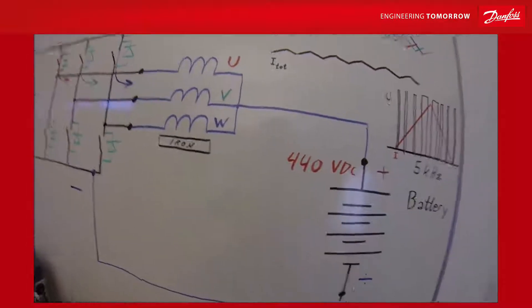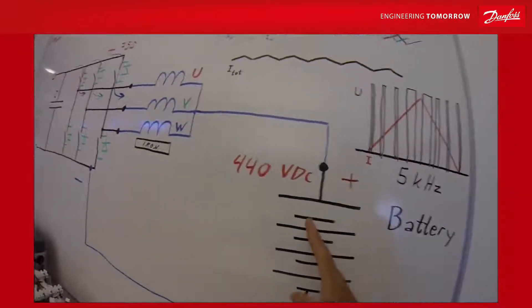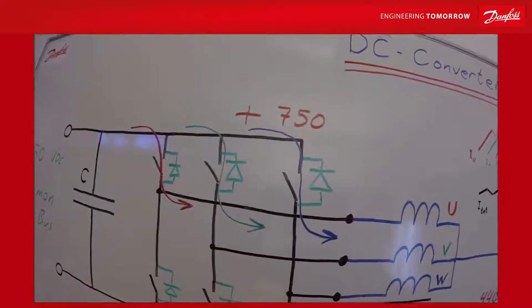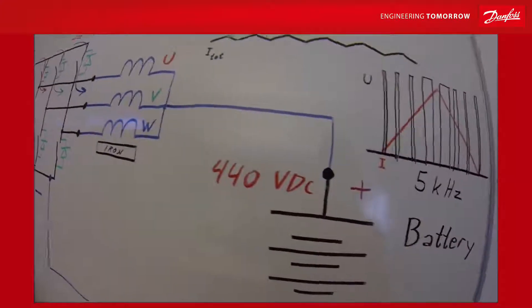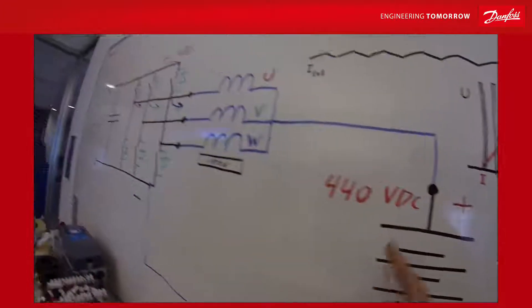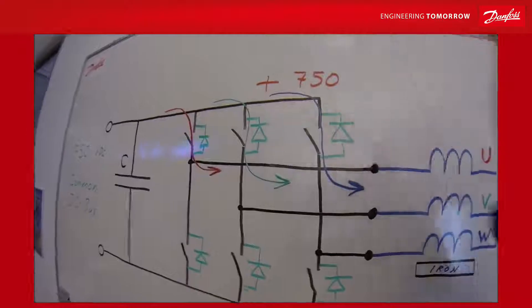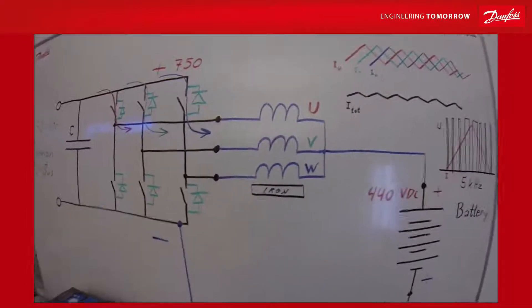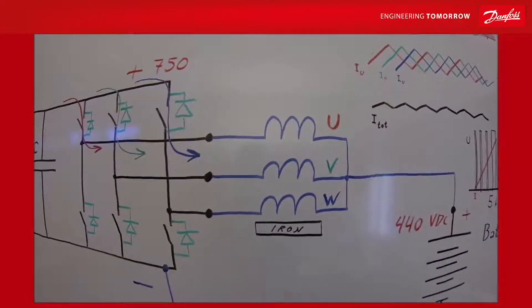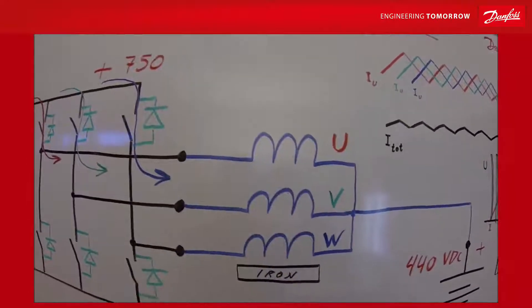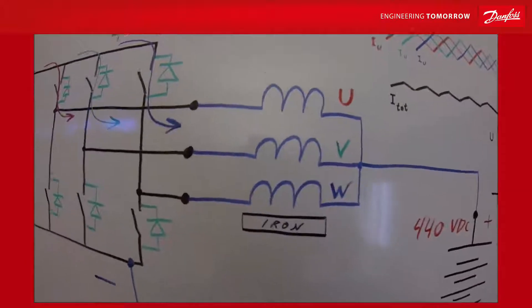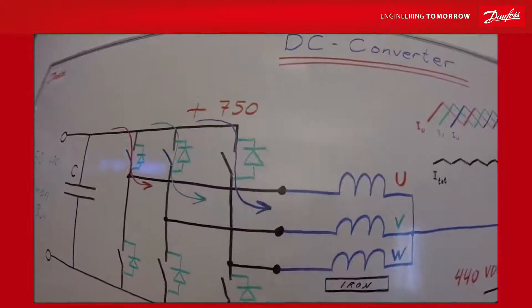What about current flowing from the battery to the common DC bus? The voltage level here is higher than the battery, so this should seem to be a little bit complicated. What we do is called DC boosting. We are boosting the voltage over the chokes in such a way that we can have the current flowing in this direction.